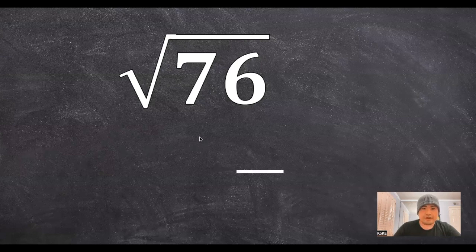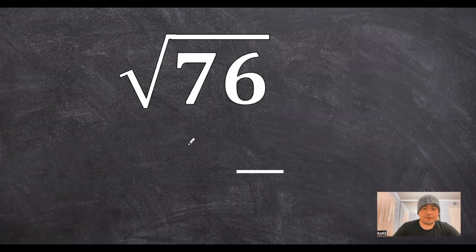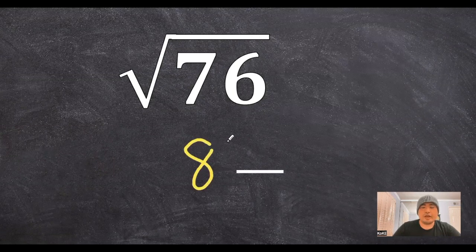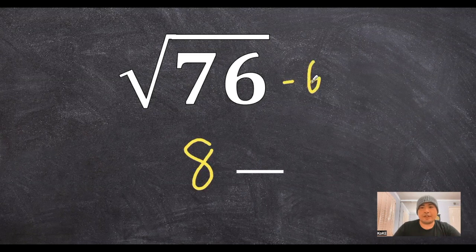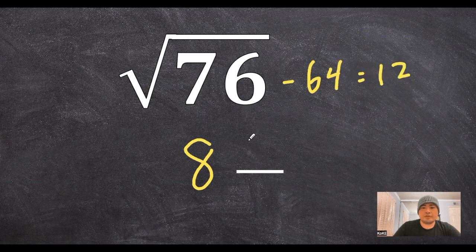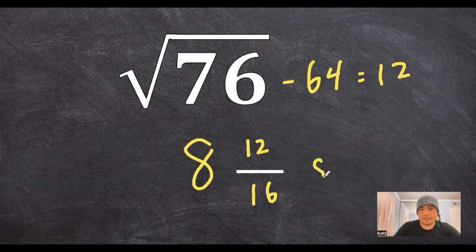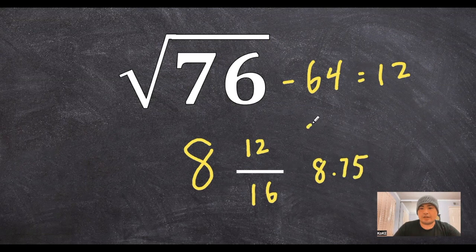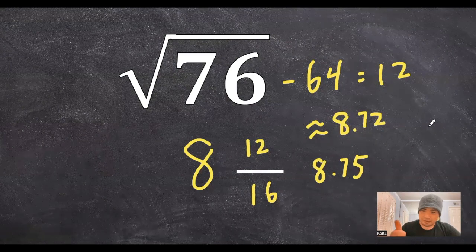Now let's go a little bit faster here. So 76, the perfect square closest to it would be 8, which gives us 64. Find the difference, which equals 12. And then for our denominator, it's going to be 16. When we reduce that, we can reduce that down to 8.75. And then our calculator answer gives us a rough estimate of 8.72, which again is super close.